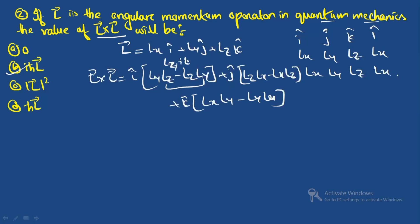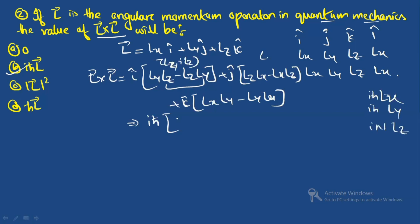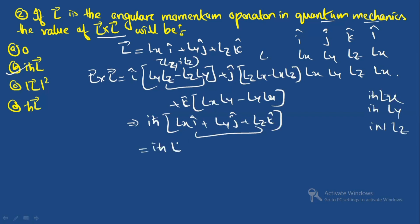Each bracket is a commutator of angular momentum components. In quantum mechanics, [L_y, L_z] = iℏL_x, [L_z, L_x] = iℏL_y, and [L_x, L_y] = iℏL_z. Factoring out iℏ, we get L × L = iℏ(L_x î + L_y ĵ + L_z k̂) = iℏL.